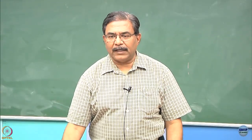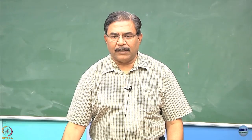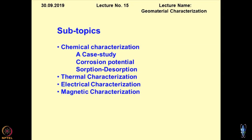We have been talking about material characterization and particularly chemical characterization. I will cite one example — a case study done by us a few years back — followed by the corrosion potential, which is a very important topic in today's world for industries where piping and underground or buried structures are installed. After this, I will switch over to adsorption and then thermal, electrical, and magnetic characterization.